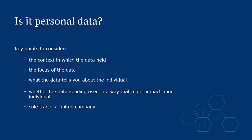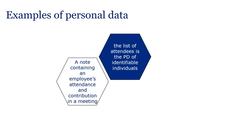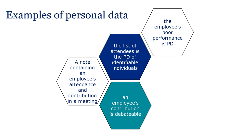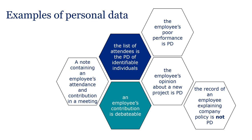Let's consider some more examples where it's less obvious. The first example is a meeting note held by a business recording an employee's attendance and contributions in a work meeting. The list of attendees at the meeting is the personal data of identifiable individuals. However, an employee's contribution to a meeting is more debatable. If the people in the meeting discuss and record details about the employee's poor performance, then this is that individual's personal data. Likewise, the employee's opinion about a new project is their personal data. But if the meeting note records that the employee merely explained the company's policies, their contribution doesn't relate to them and so isn't their personal data.